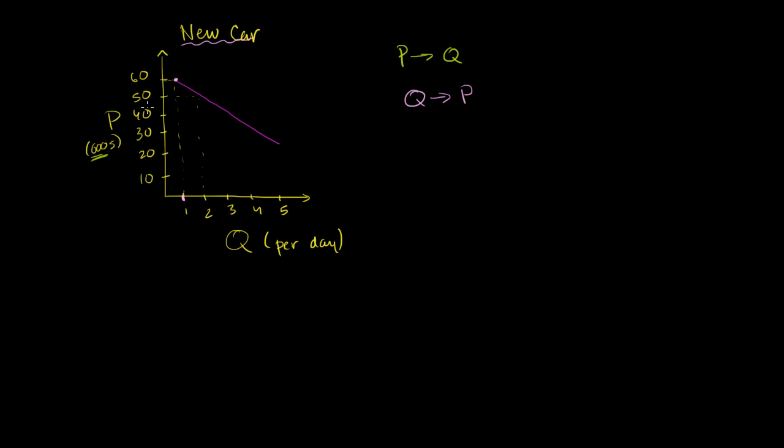that person is going to be willing to trade $60,000. They're going to be willing to forgo what else they could have bought for that $60,000. And instead, they want that car. And so then you would plot that point right over there. If you only had one unit, you could sell it for $60,000.